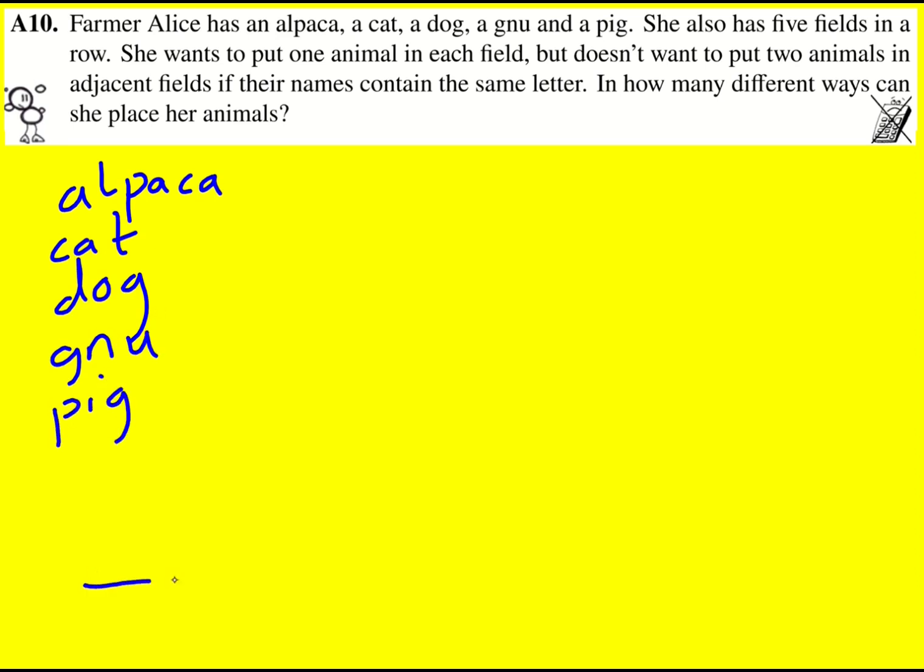We've got to put them in a field, or sorry, in five fields in a row, but we're not allowed to put any two animals in adjacent fields if the names contain the same letter.